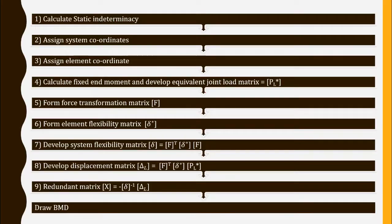We will get an equivalent joint load matrix, then develop a force transformation matrix and element flexibility matrix. Developing a system flexibility matrix is done using the equation delta equals F-transpose times delta-star times F, where F is the force transformation matrix and delta-star is the element flexibility matrix. After that, the displacement matrix is developed using delta-L equals F-transpose times delta-star times F-transpose times delta-star times P_L-star, where P_L-star is the equivalent joint load matrix.